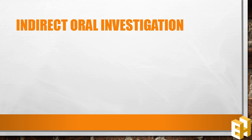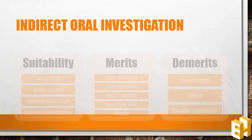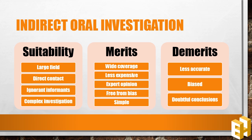The second method is indirect oral investigation. Under this method, the information is collected from a third person who is expected to have the necessary information. The persons from whom information is collected are known as witnesses. For example, in case of robbery, the neighbours are asked to provide the necessary information and hence they are called the witnesses. This method is suitable when there is a large field of investigation, direct contact with the informant is not possible, informants are ignorant or illiterate, and the investigations are complex in which only experts can provide information.